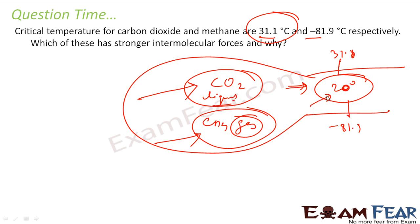See, it is very easy actually. You take a temperature between these two and then you try to visualize the state of these two gases. At 20 degrees Celsius, you can take 10 also because it is between these two or 0 also. So at any temperature between these two, you find that carbon dioxide is liquid and methane will be gas and that can tell you that carbon dioxide has more stronger intermolecular force.